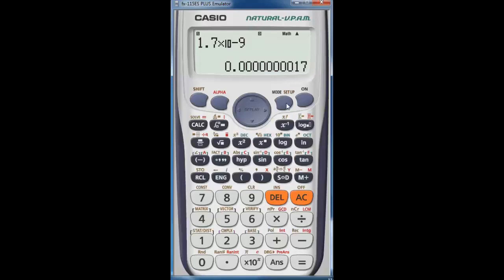Shift mode setup math 2. So that's 1.7 times 10 to the negative 9 equals that for our decimal notation, equals that for our engineering notation.